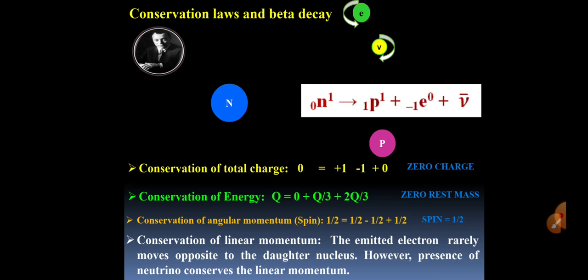Conservation of linear momentum. The emitted electron rarely moves opposite to daughter nucleus. However, presence of neutrino conserves the linear momentum.